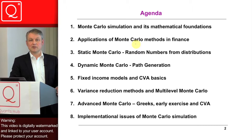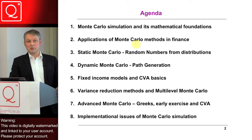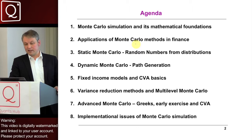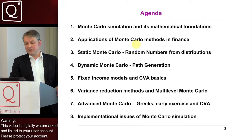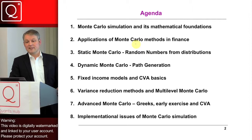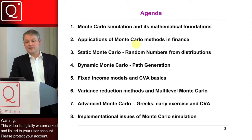Throughout the course, we also consider implementational issues of Monte Carlo simulation, because Monte Carlo can be set up in a nice way using object-oriented programming, specifying all the building blocks as separate classes which interact and can easily be extended and modified to suit your own needs. Monte Carlo simulation is, I think, a good illustration for using object-oriented programming. That is the agenda for the second part of the Monte Carlo course.